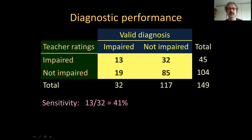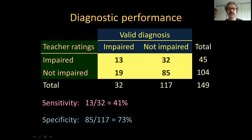The other index we can calculate is related to the children who are not impaired. Of those children who are not impaired, what proportion are correctly classified as not impaired? Dividing 85 by 117 gives what is called specificity — how specific is the detection provided by this instrument. If it is specific, it will always reject those who aren't impaired; if it is non-specific, it will detect children who aren't impaired. In this case, specificity is 73%.